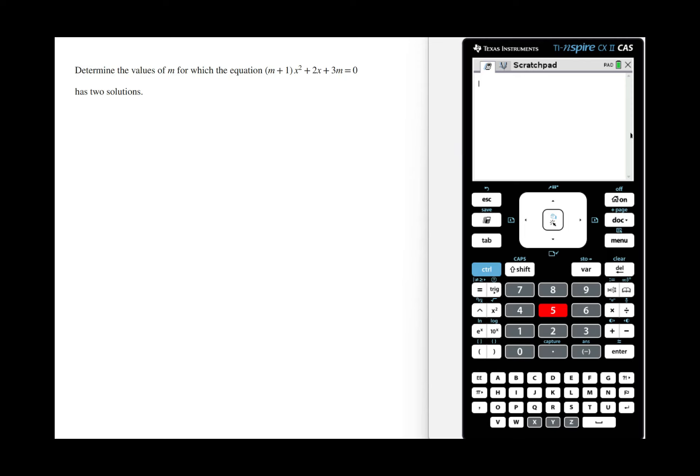How to find the values of n for which a quadratic has two solutions? For this question, we need to determine the values of n for which the equation (n+1)x² + 2x + 3m = 0 has two solutions.